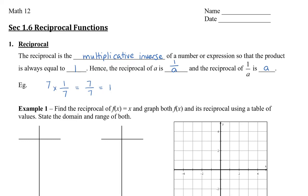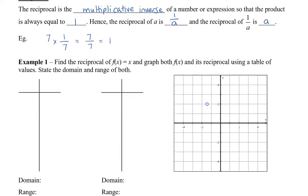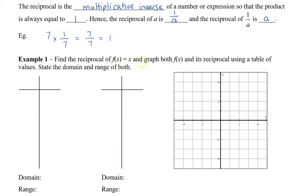Let's take a look at how to graph an original function and then see what it looks like when we take the reciprocal. So here we have f of x equal to x, and the reciprocal of that, let's call it g of x, would equal 1 over x.